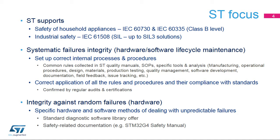ST, in compliance with these standards, cares about both systematic and random failures. Systematic failures are predictable, and their avoidance and monitoring are based on practical experience gained in the industry. They can be avoided mainly by applying correct internal processes throughout a product's life cycle, as defined in specific internal quality documentation. Regular inspections and audits ensure these internal rules are applied and comply with recognized standards. To ensure integrity against random failures, specific software methods and hardware design techniques must be applied.